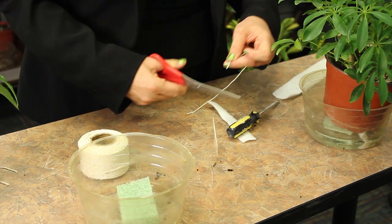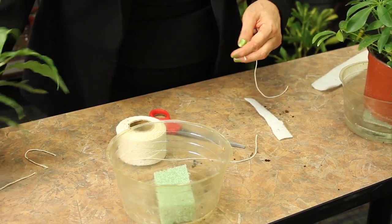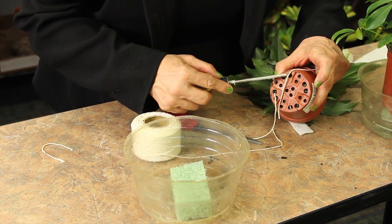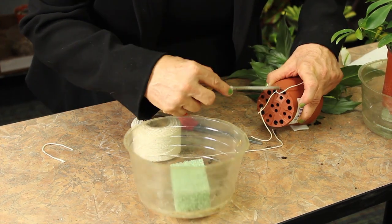Let me show you with the cording. A small piece of cording, same thing, we take a small screwdriver, put it in the hole, and place the cording up into the plant.